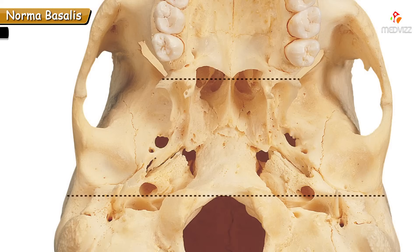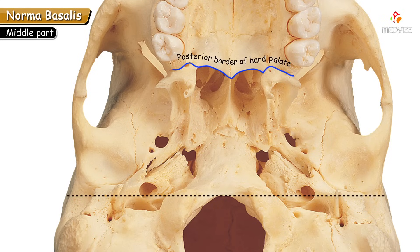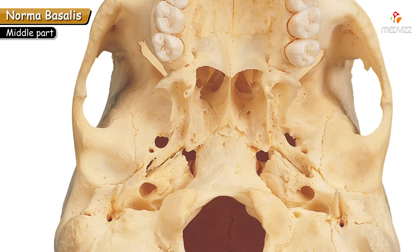Now we study the middle part of norma basalis. It extends from the posterior border of the hard palate anteriorly, and posteriorly it extends up to an imaginary line drawn across the margins of the foramen magnum, which separates the middle part from the posterior part of norma basalis.